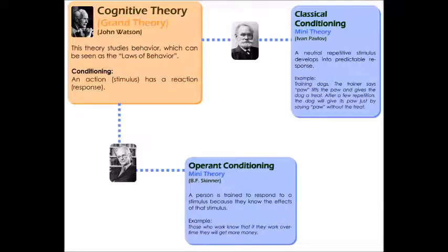Pavlov and Skinner extracted many theories from this grand theory, basing their theories on the conditioning concept. The first is classical conditioning — a mini theory. It states that a neutral repetitive stimulus develops into a predictable response. For instance, a trainer says 'paw' and the dog lifts its paw and receives a treat. After a few repetitions, the dog will give its paw just by hearing 'paw,' without the treat. This is a mini theory extracted from the grand theory.